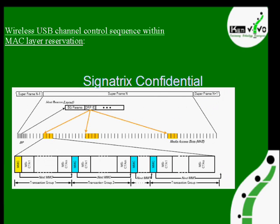Now there is one more slide indicating the wireless USB channel control sequence within the MAC layer reservation. The analog signal will have many super frames, and each super frame is made up of many slots called media access slots. Totally, there are 256 media slots in a single super frame. Some slots are grouped together and this is known as DRP — Distributed Reservation Protocol — which is one kind of reservation out of these 256 micro slots.